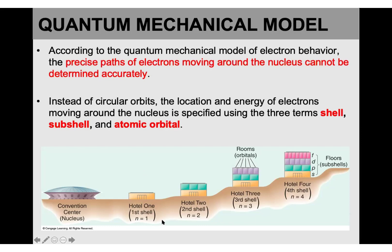As we go further from the nucleus we add to the number: n=1 is the shell closest to the nucleus, and n=7 fills the last electron in the last element discovered, which is element number 118. At this level I'm not going to go up to n=7 — I'm just focusing up to n=4. In higher levels of chemistry they will show you more about how electrons are filled at higher levels of energy.